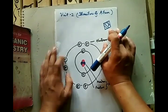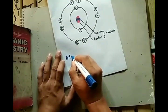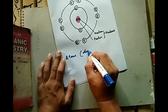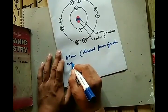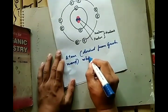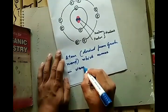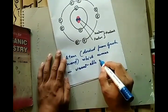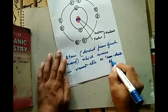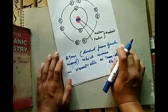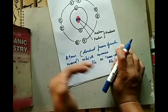The word atom is derived from the Greek word 'a-tomos' which means uncuttable or non-divisible. They believed the atom to be the smallest unit which cannot be cut or which cannot be divided.